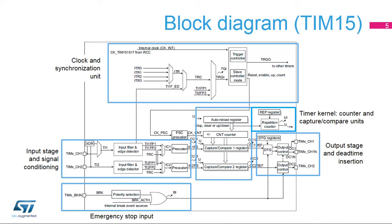This slide provides the block diagram of the medium-featured TIM15 timer. The timer kernel consists of a 16-bit up-counter, coupled with an auto-reload register to perform the counting period, and a repetition counter to adjust the counter rollover interrupt rate. The two timer channels are controlled by two capture-compare registers. The counter is fed by the clock and trigger control, also responsible for timer chaining. The input stage and conditioning circuitry are shown on the left, while the output stage is on the right. It includes dead-time insertion for complementary PWM outputs suitable for half-bridge power stages. A TIMX-BKIN input can be used for PWM emergency shutdown.